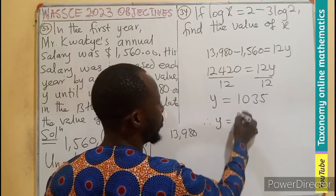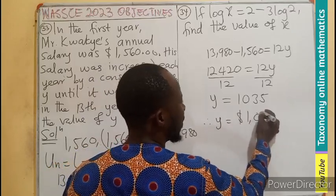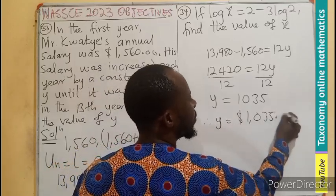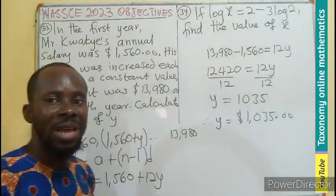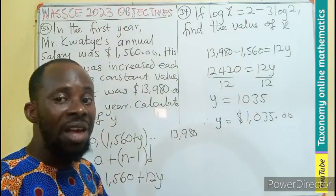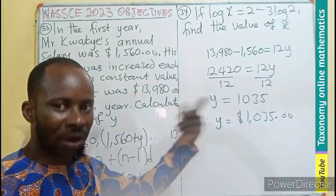y is going to be in dollars, $1,035. Meaning this is the value of money that will be added to his salary every year. That is the common difference.